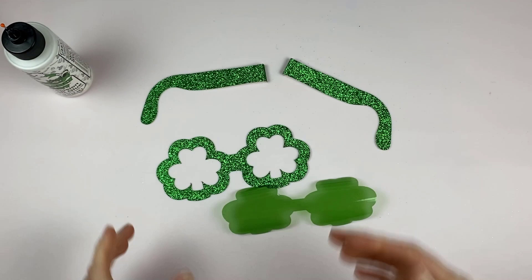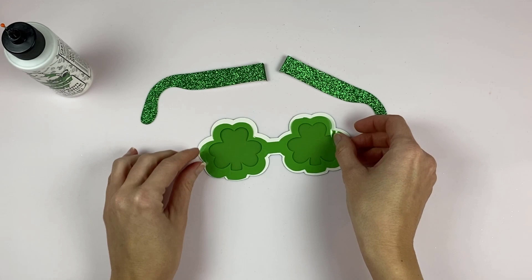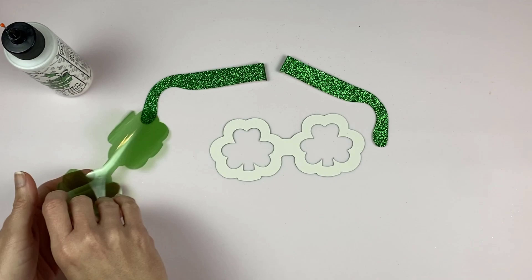Then we'll want to attach the cellophane to the glasses and what we'll do is we'll just put some glue around it and glue it on.